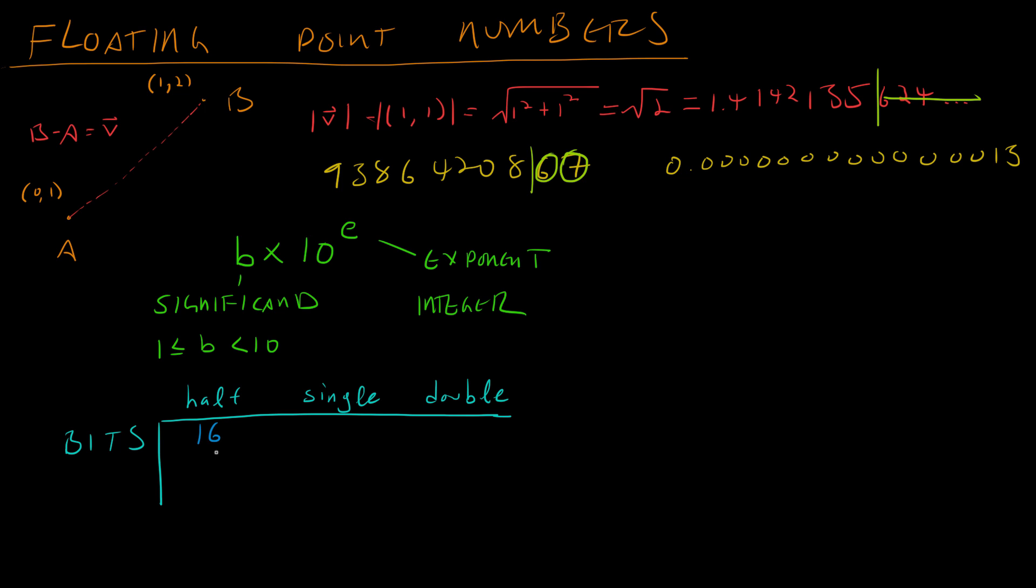For half precision, there are 16 bits total, so these bits are shared for the significand and the exponent. For single precision, there are 32 bits to go around for both of them, and for double precision, there are 64 bits to go around.